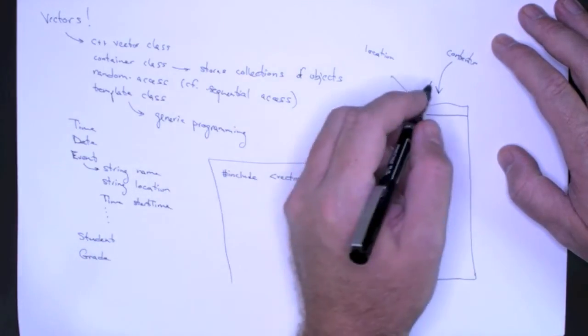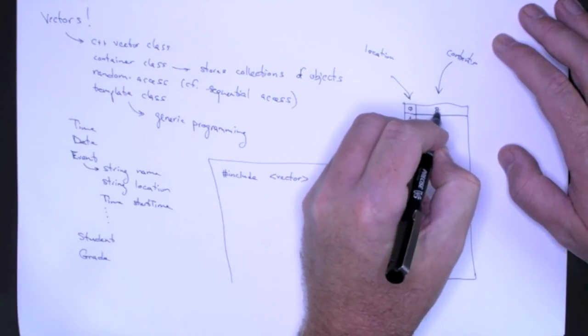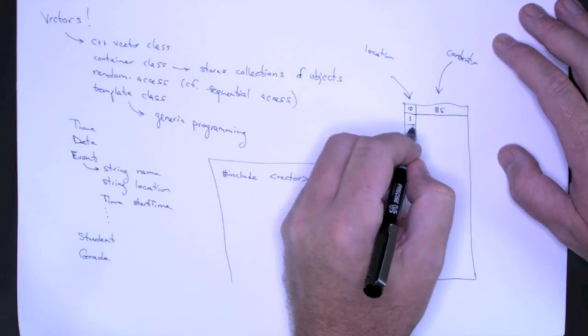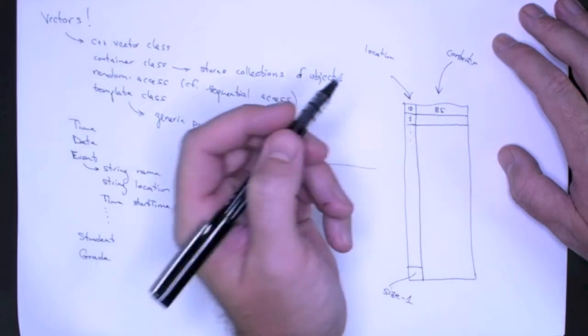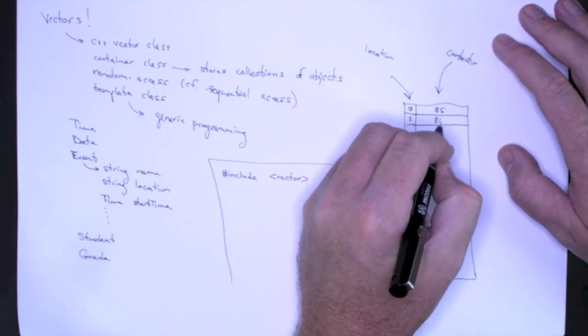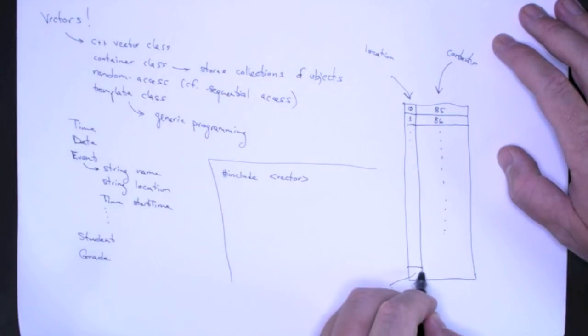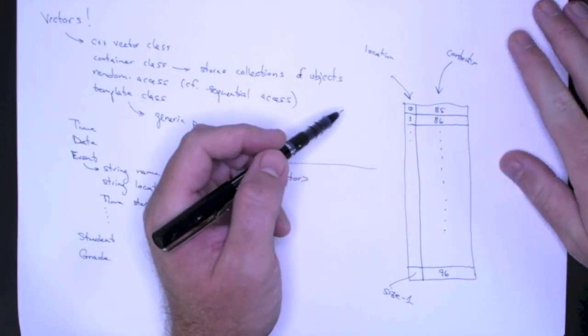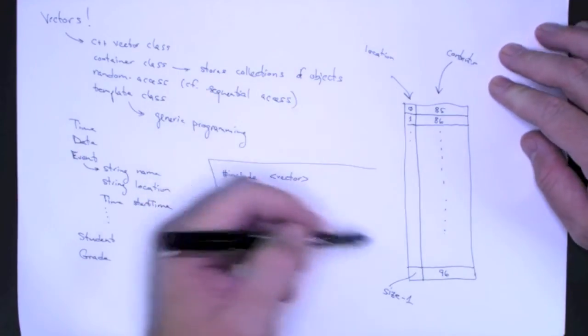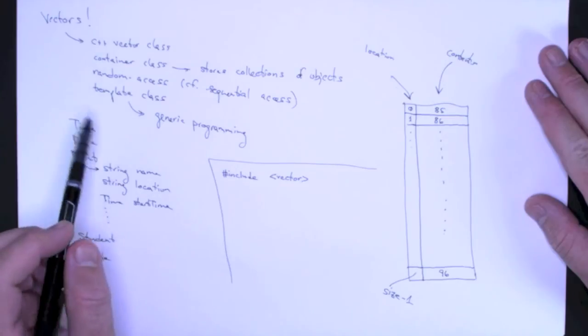So for example, this could be my first grade that I get on a test. This could be the second grade that I get for an assignment, and so on and so forth. And I can store, maybe I did well on the last assignment. And I can store all of my grades in this vector. And so you can see that I have a collection of these integers, a collection of these grades.